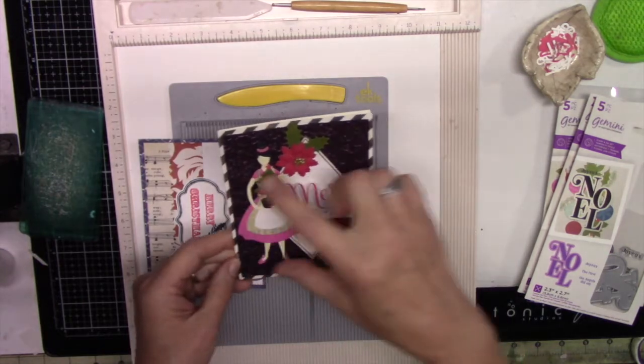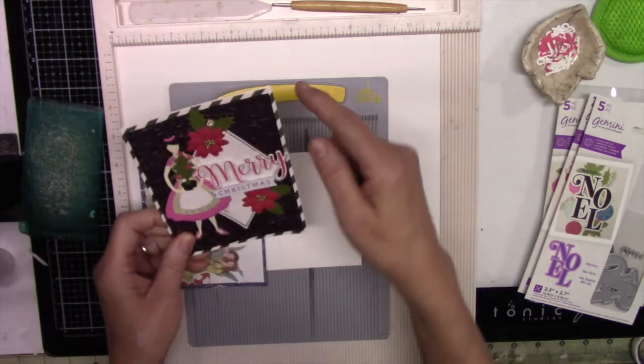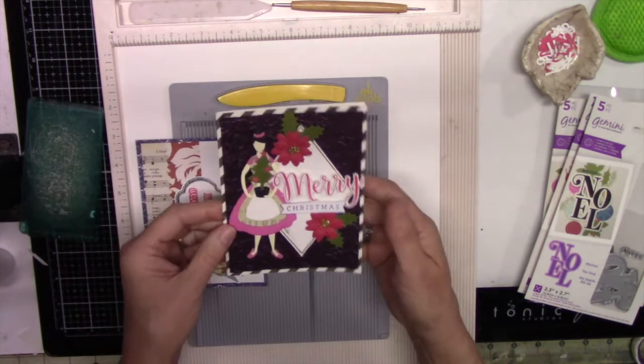So I can either make a card with this format that's four and a quarter by five and a half or five and a half by four and a quarter. So I can do it this way or I can do a card portrait like that.